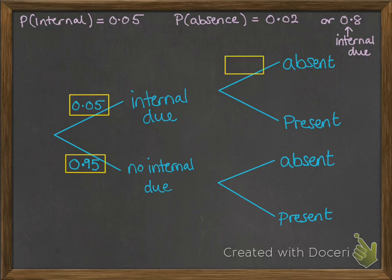First of all, in this box here we need to follow the line of thinking that he has an internal due, what's the probability that he's absent? So that's the 0.8.